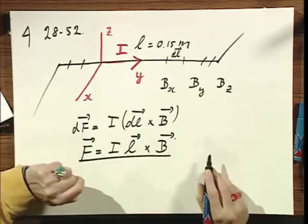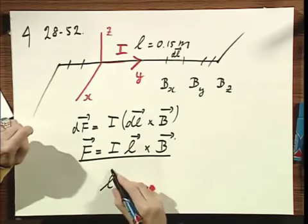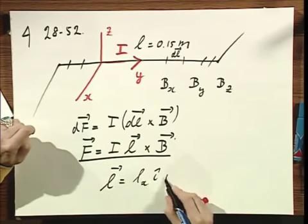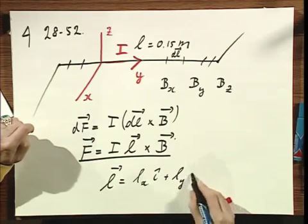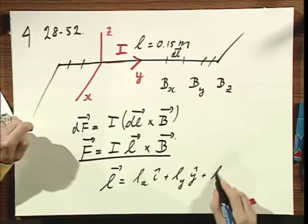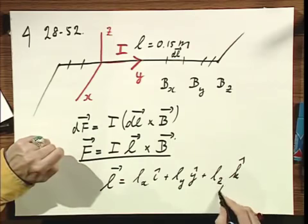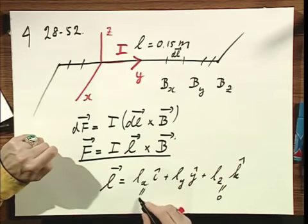l itself equals lx times the unit vector in the i direction plus ly unit vector in the y direction plus lz unit vector in the z direction. This is zero, this is zero because we only have l in the y direction.